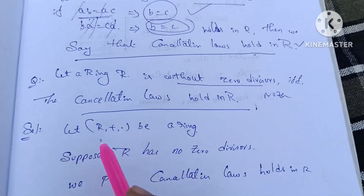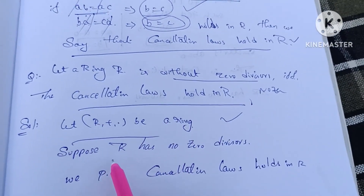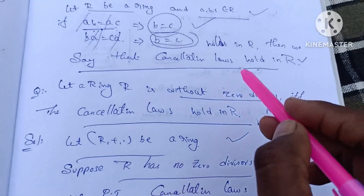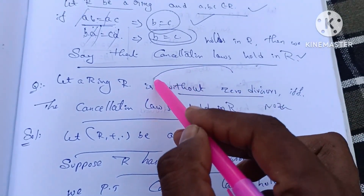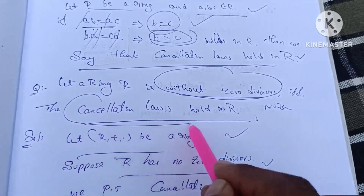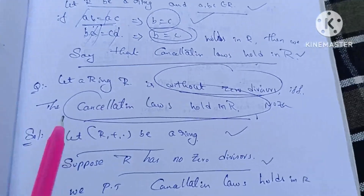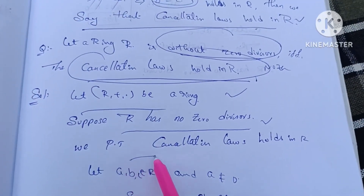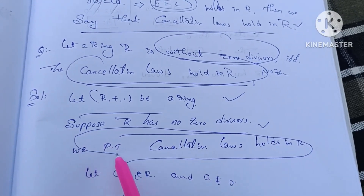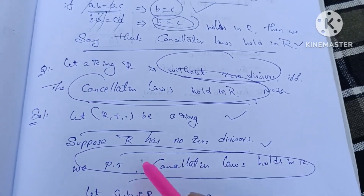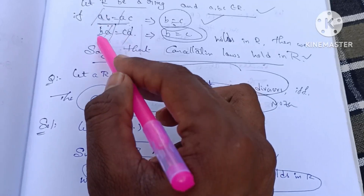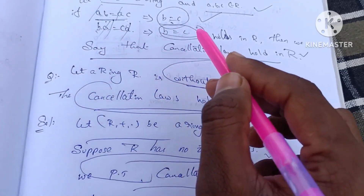Let R be a ring. Suppose R has no zero divisors. So first, we have R without zero divisors. We can prove that cancellation laws hold in R. Let's say cancellation laws hold in R: if AB equals AC, then B equals C.